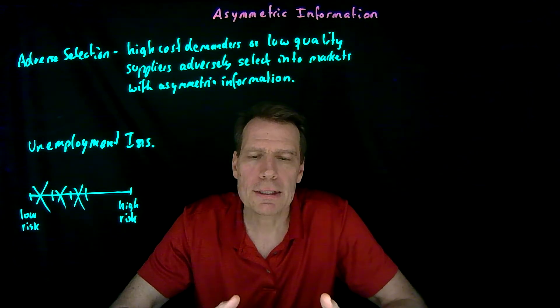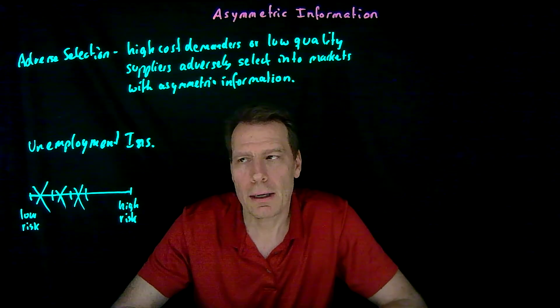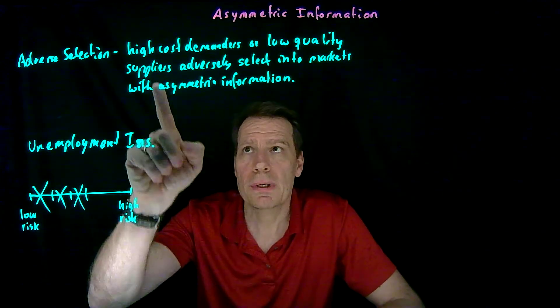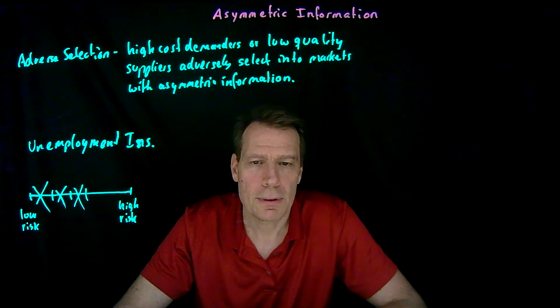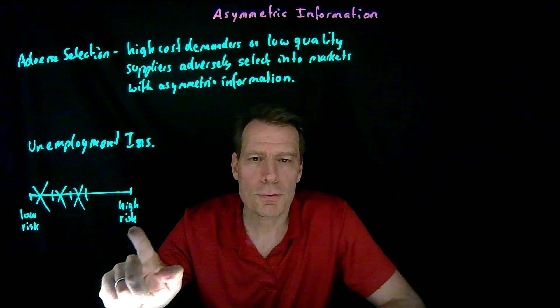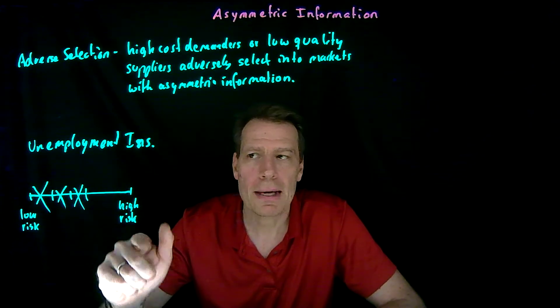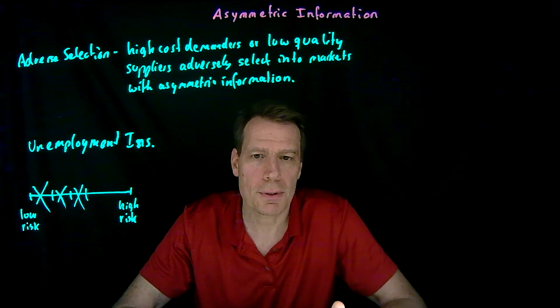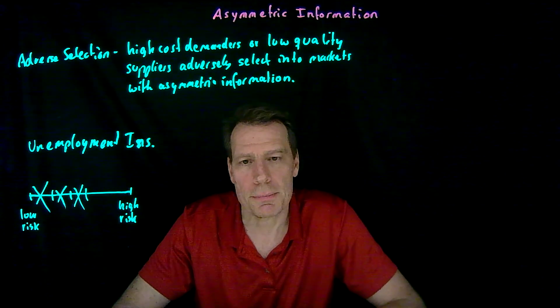We've seen how adverse selection can lead to the unraveling of a market, a market like unemployment insurance. In that market, we have high-cost demanders, people who are at high risk of losing their jobs and would demand unemployment insurance and be likely to use that insurance because they're likely to lose their jobs.